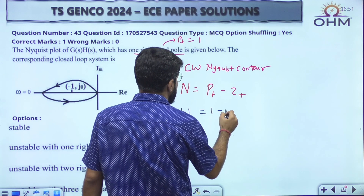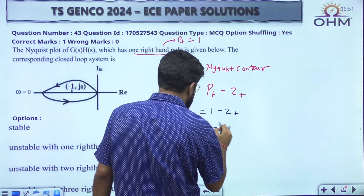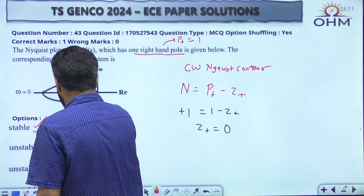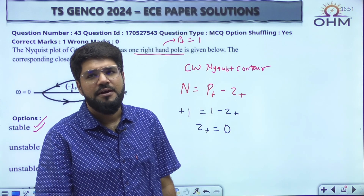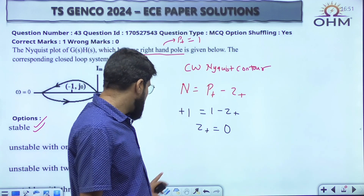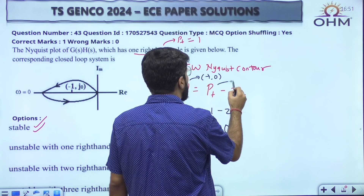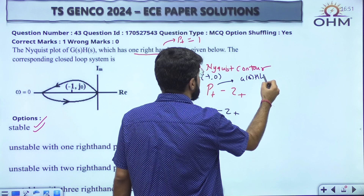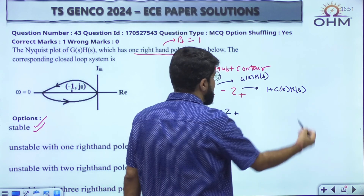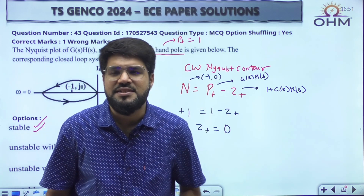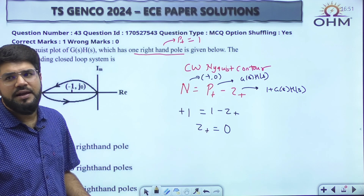So: 1 equals P+ (which is 1) minus Z+, meaning 1 and 1 cancel, and Z+ equals 0. So the system is stable. Z+ is the number of zeros of 1 plus G(s)H(s) in the RHP — the roots of the characteristic equation. Because there are no roots of the characteristic equation in the RHP, this signifies stability. The correct answer is option number A.